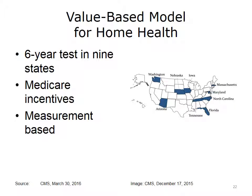The goals of the program are to provide incentives to Medicare HHAs to provide higher quality and more efficient care. Similar to MIPS, these home health agencies will be scored on a series of measures and compared to each other. The specifics of the home health value-based purchasing model include 21 quality measures based on an established home health quality measurement set known as OASIS, consumer satisfaction measures, and others. The program is designed to test whether a payment incentive of up to eight percent can significantly improve provider performance.